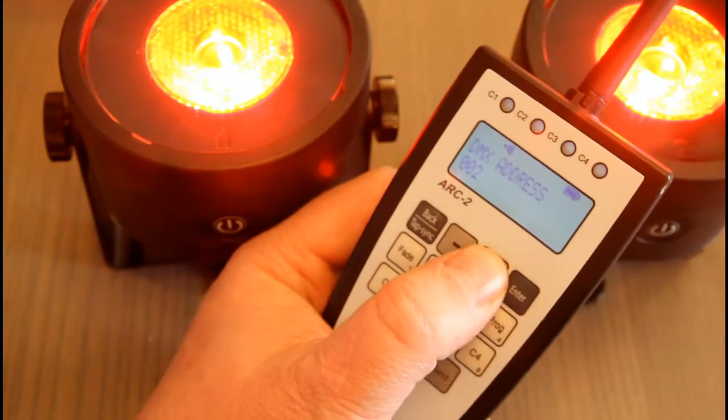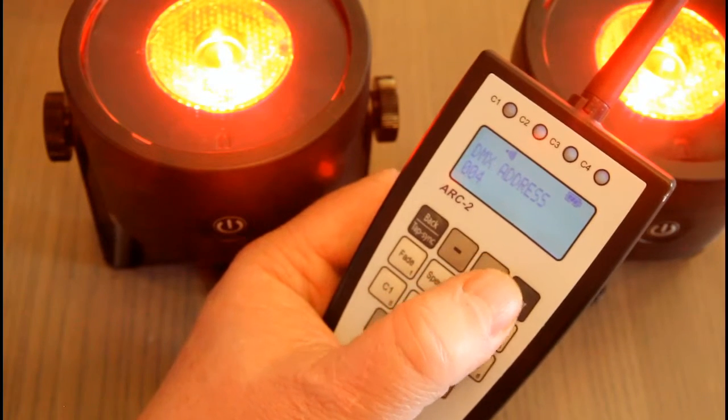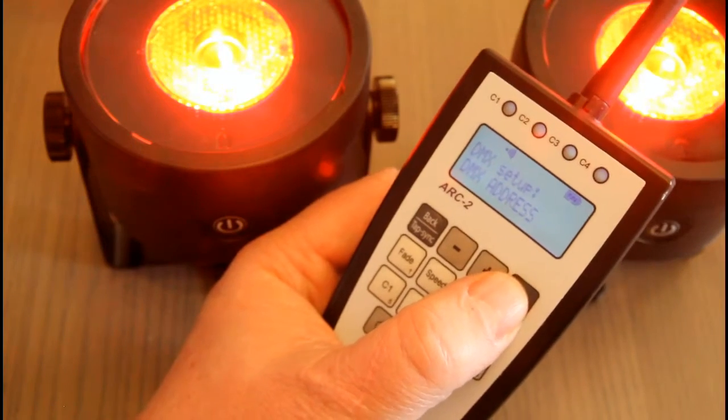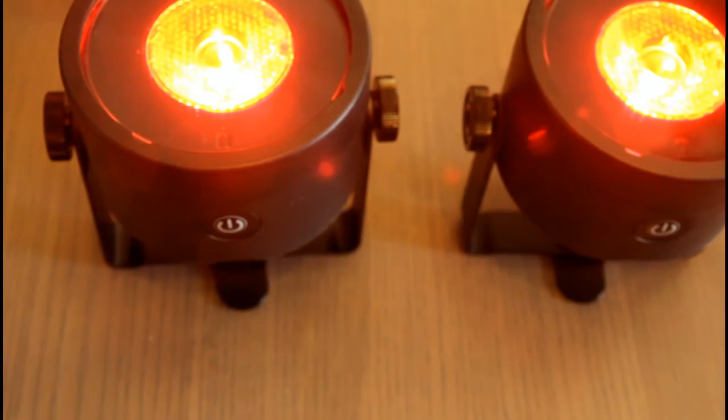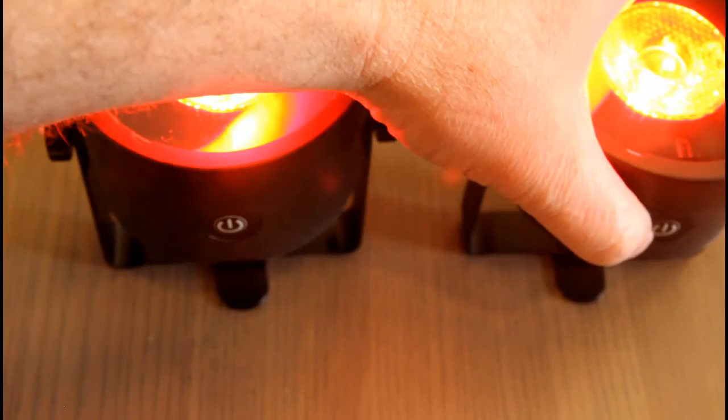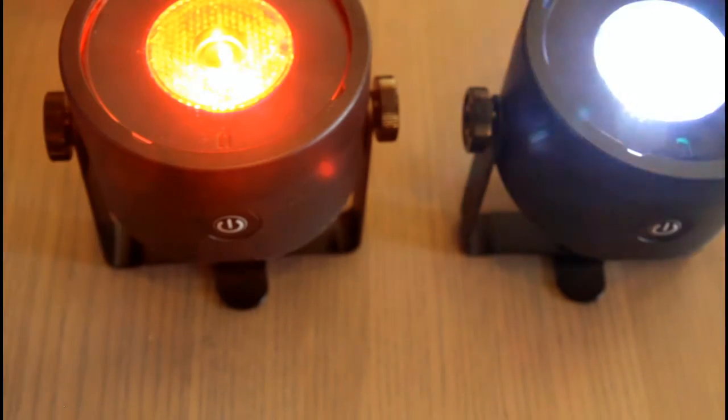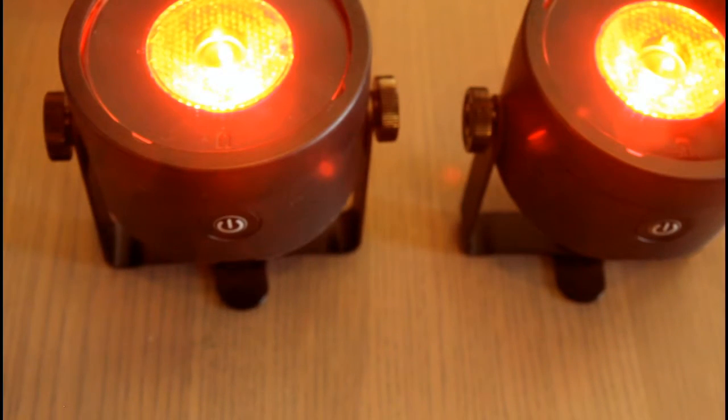Now I'm going to set the second address to DMX address 4 and hit enter. I'll pull my remote away. The lights flash. So now we have the first fixture set to address 1 and the second fixture set to address 4.